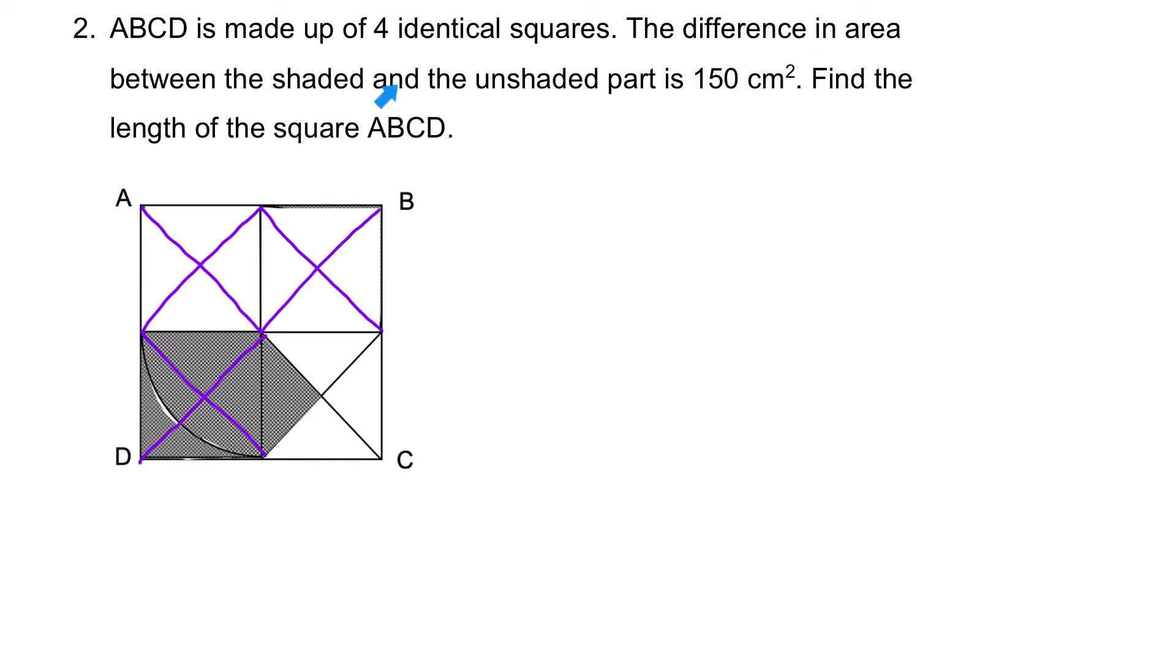So, let's look at this sentence again. The difference in area between the shaded, which is 5 triangles, and the unshaded part, which is 11 triangles, is 150 cm square. Therefore, the difference is how many triangles? 11 minus 5? 6 triangles. So, the first step. Area of 6 triangles is equal to 150 square cm. From here, we can figure out the area of 1 triangle. And that will be 150 square cm divided by 6, and that will be 25 square cm.